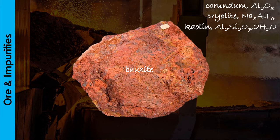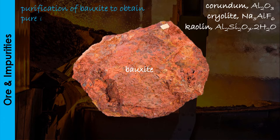The extraction of aluminium starts with the Bayer process, which is the purification of bauxite to obtain pure anhydrous aluminium oxide.